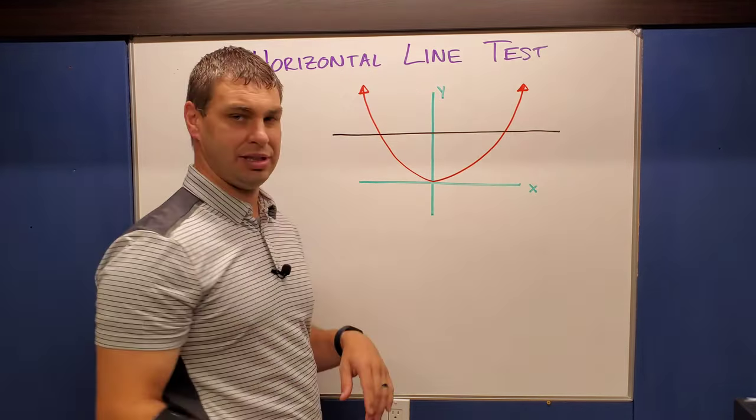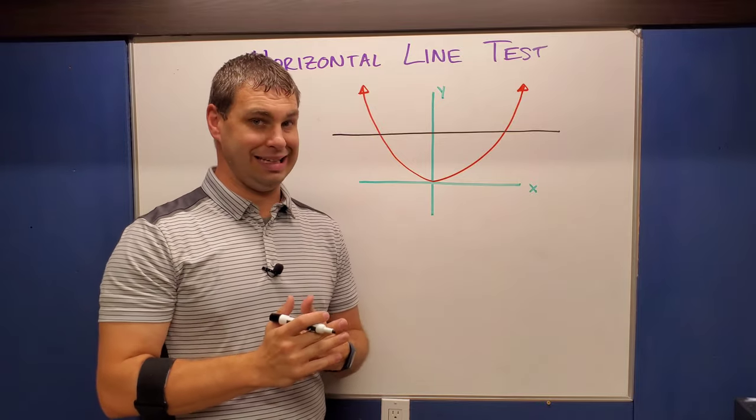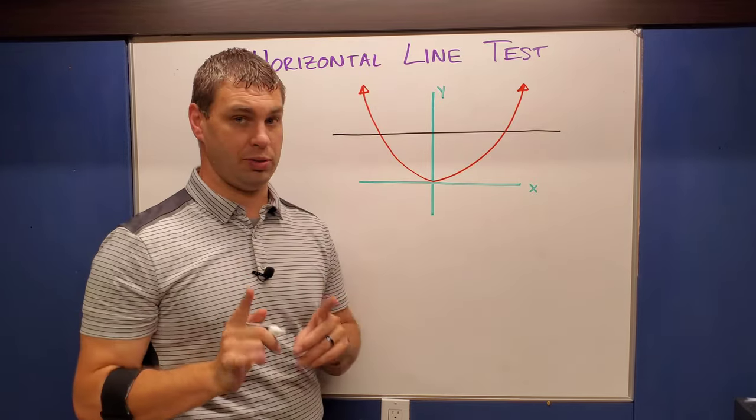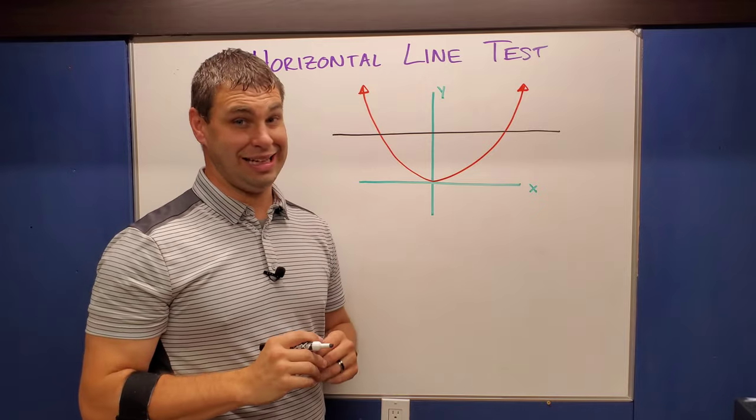and I can do multiples of those. And what the horizontal line test says is if it crosses my relation more than once, its inverse is not going to be a function.